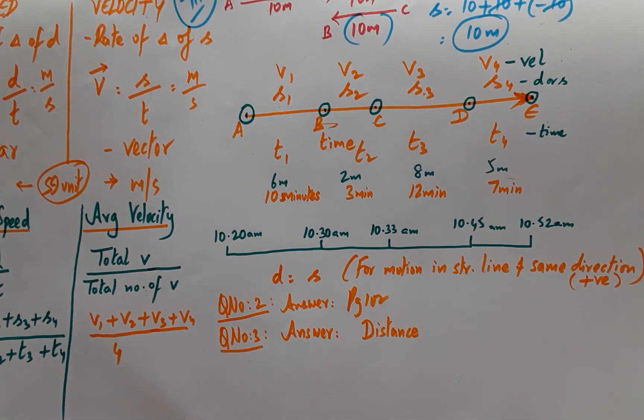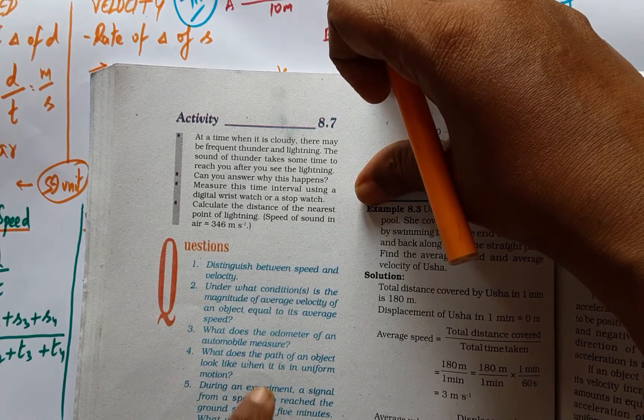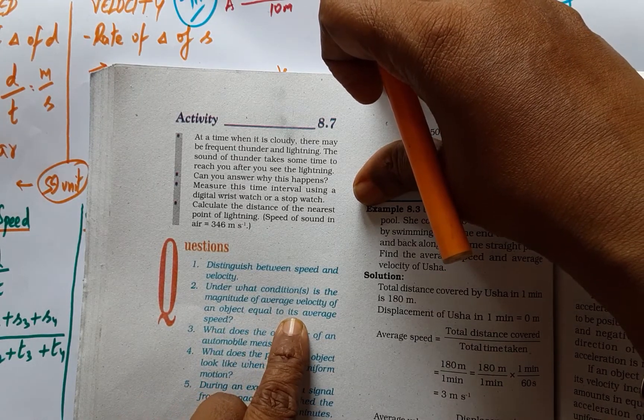Wherein it asks, under what conditions is the magnitude of average velocity of an object equal to its average speed?